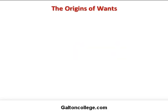The origins of wants: wants lead to our demand for goods and services. That demand starts as wants, which is essentially a psychological thing — it's within our heads. Our wants are our desires. Sometimes our wants are very basic: we want food, shelter, or clothing. These are very basic wants.